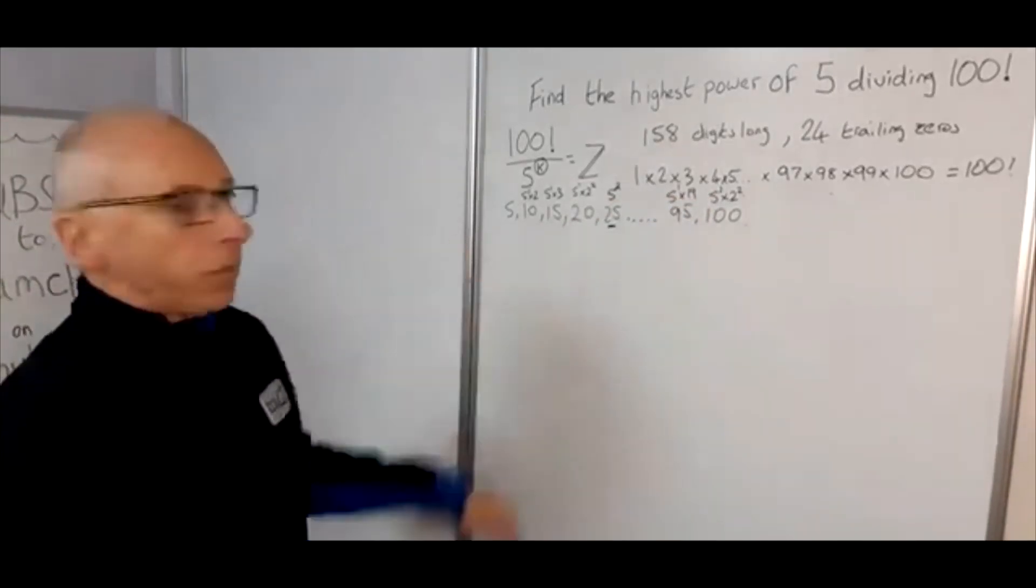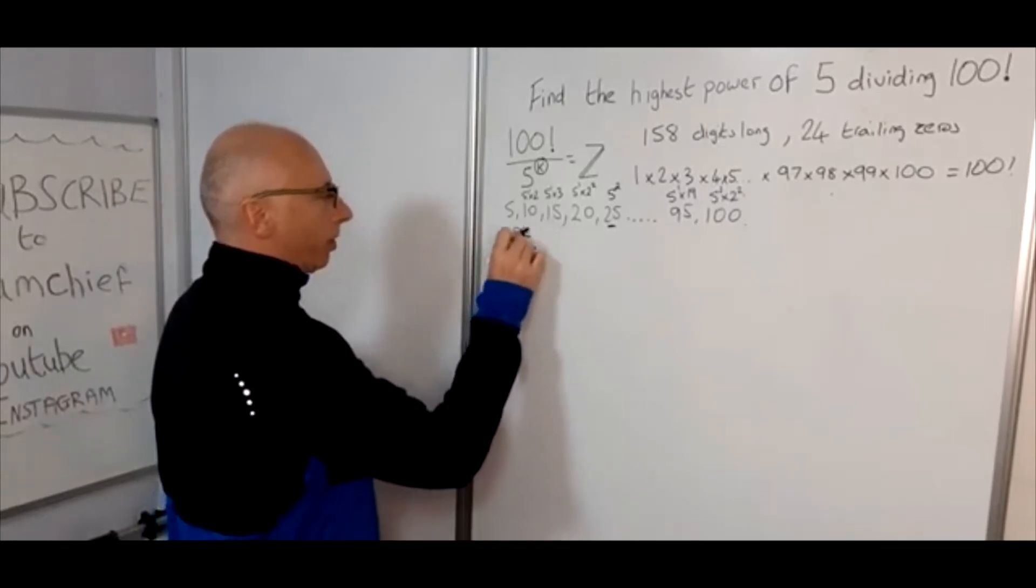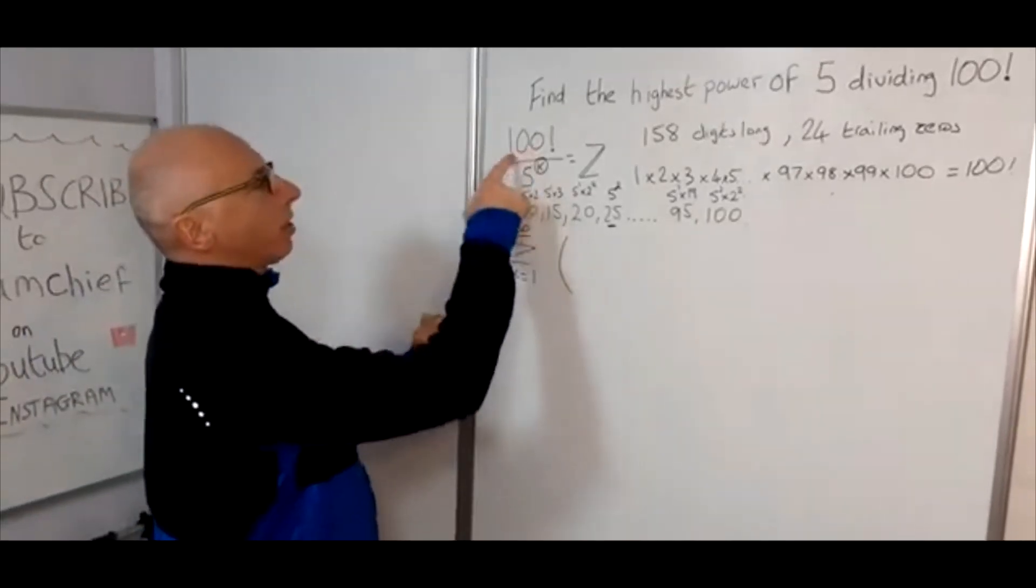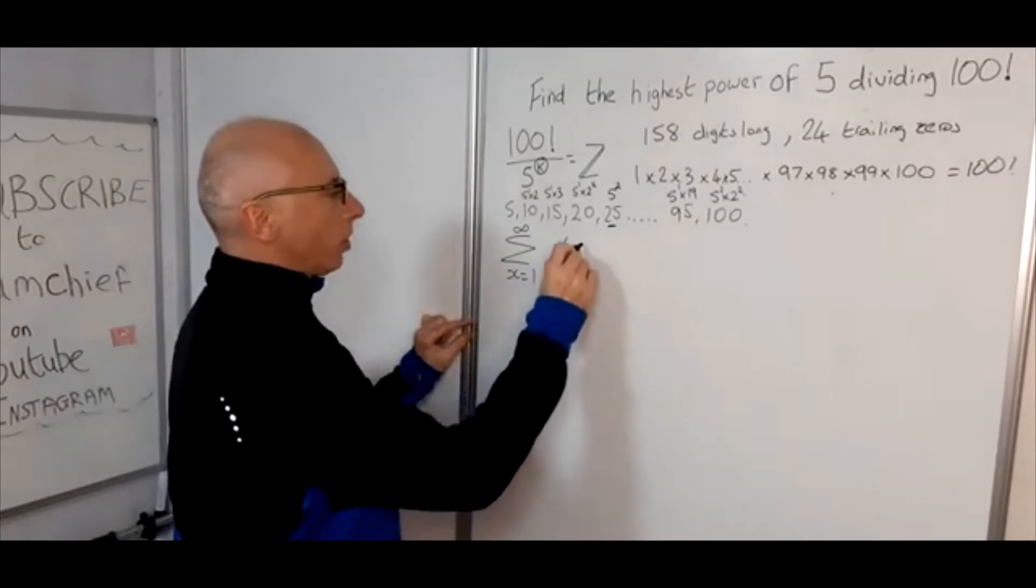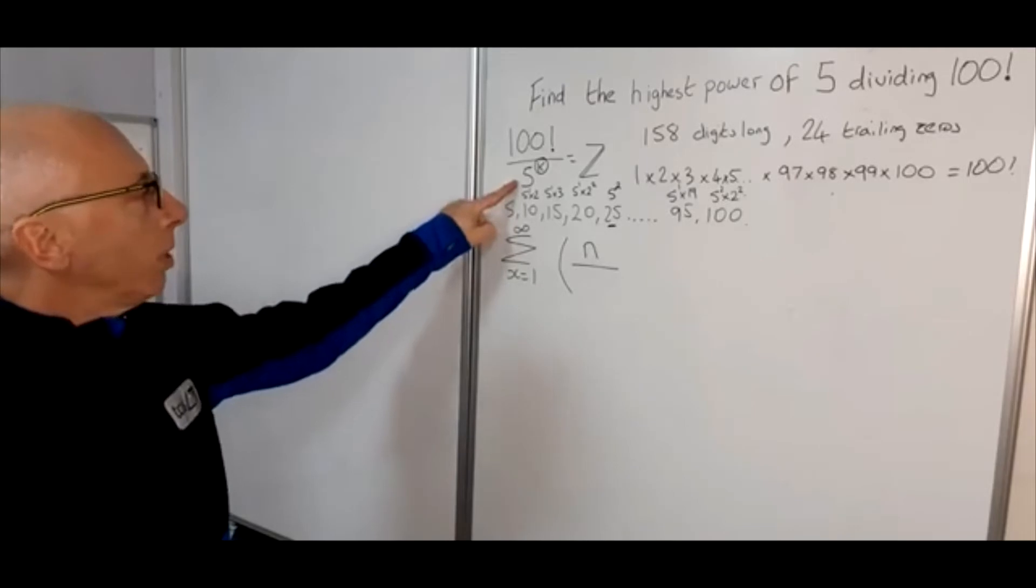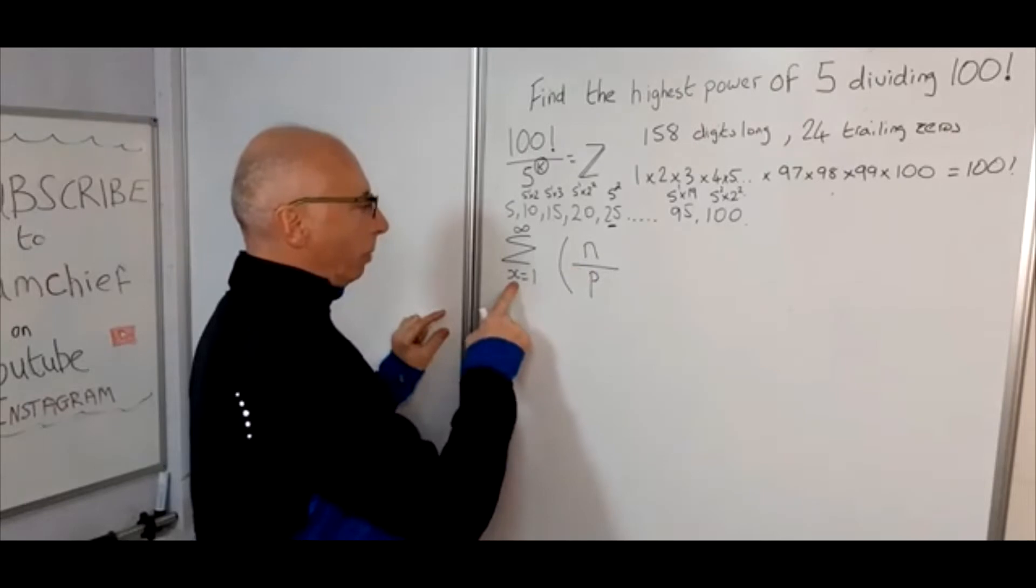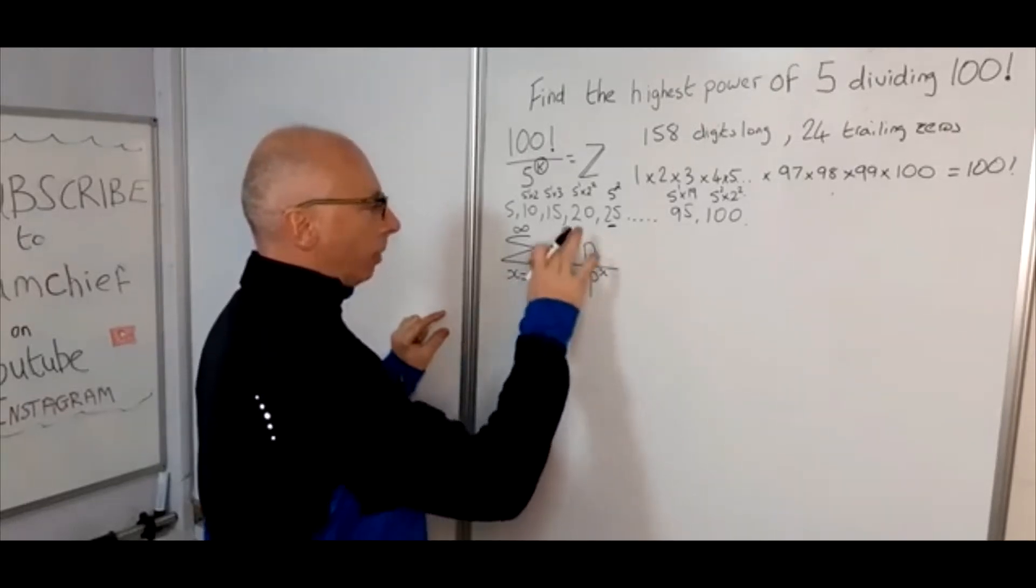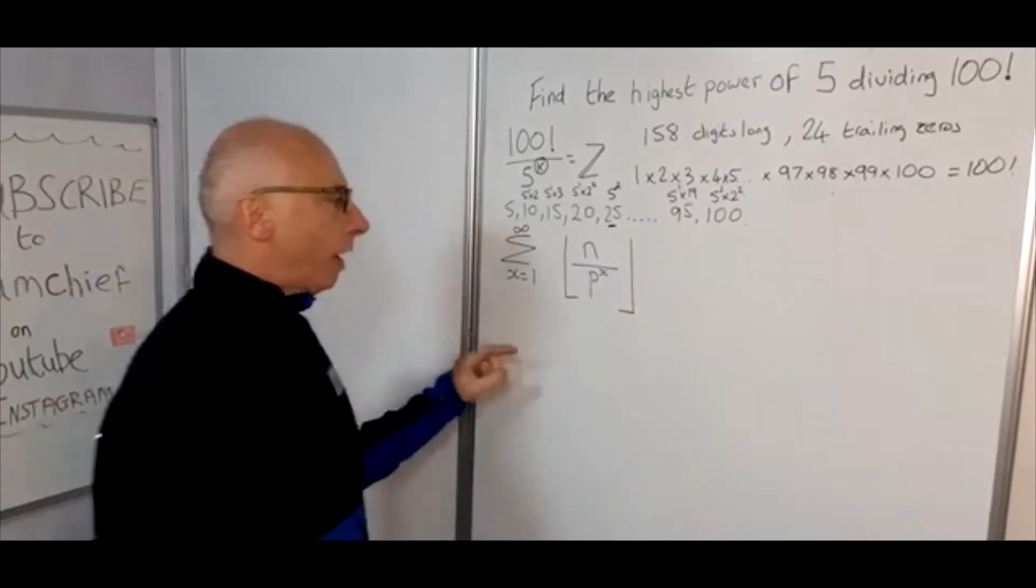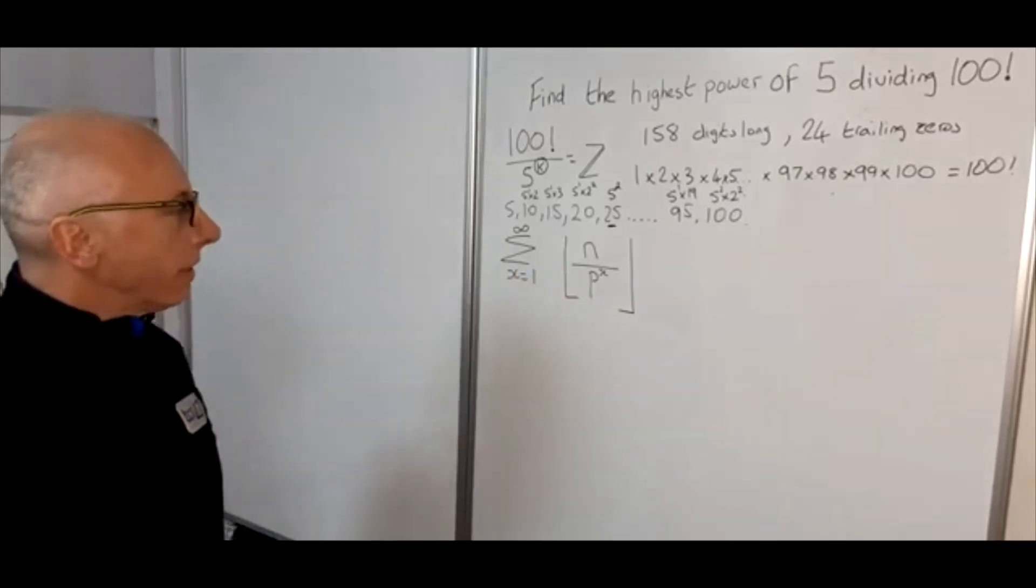So we need a summation formula. We go from x equals 1 to infinity, and then the number we're interested in is the number that's used for the factorial, so we'll just call that the number n. And then we'll divide that by the prime number which is in the denominator, we'll just call that p, and it will be p to the power of x. And that will be a floor function because what we're interested in is only integers. So we need a floor function to break this down as an integer.